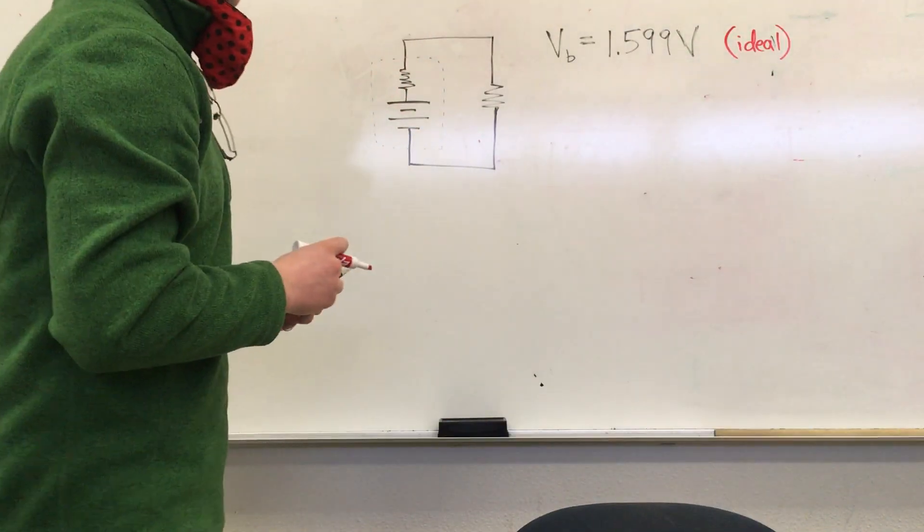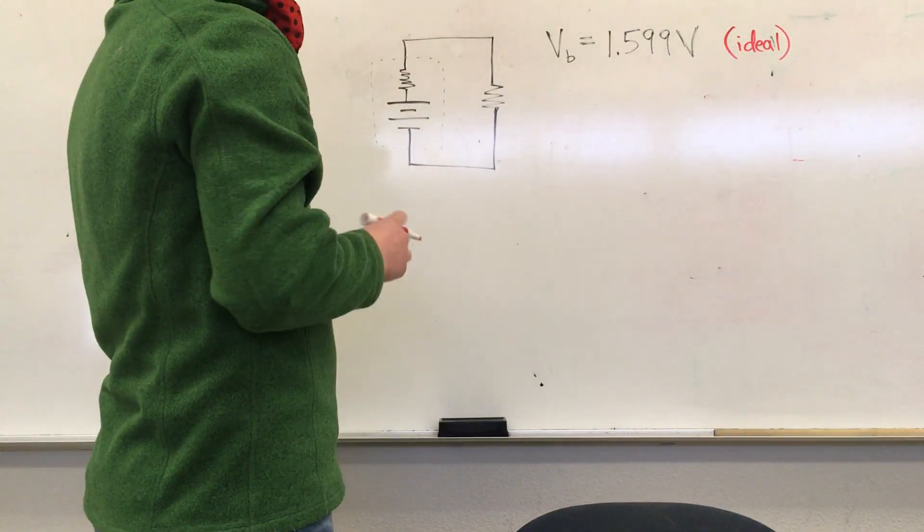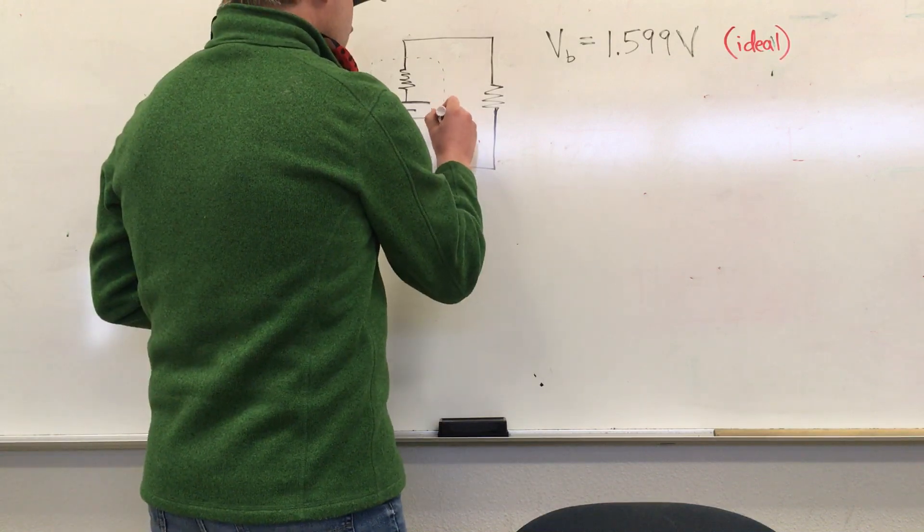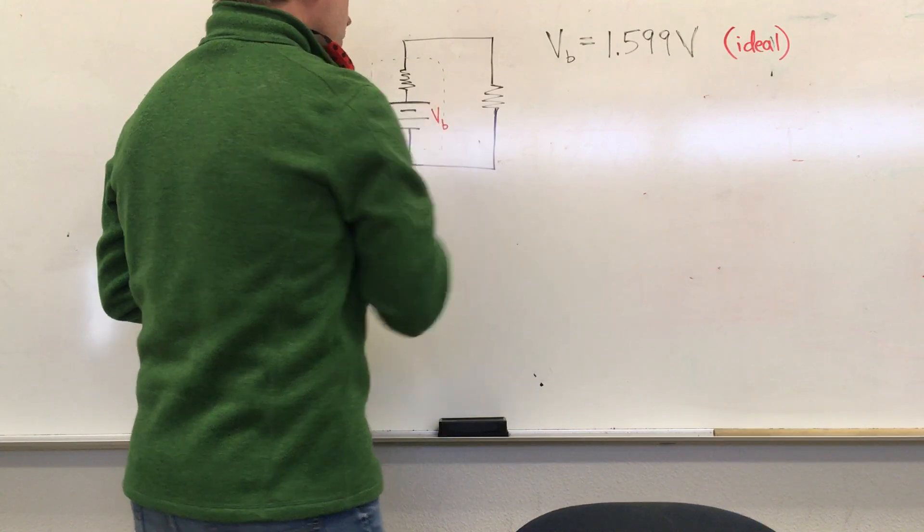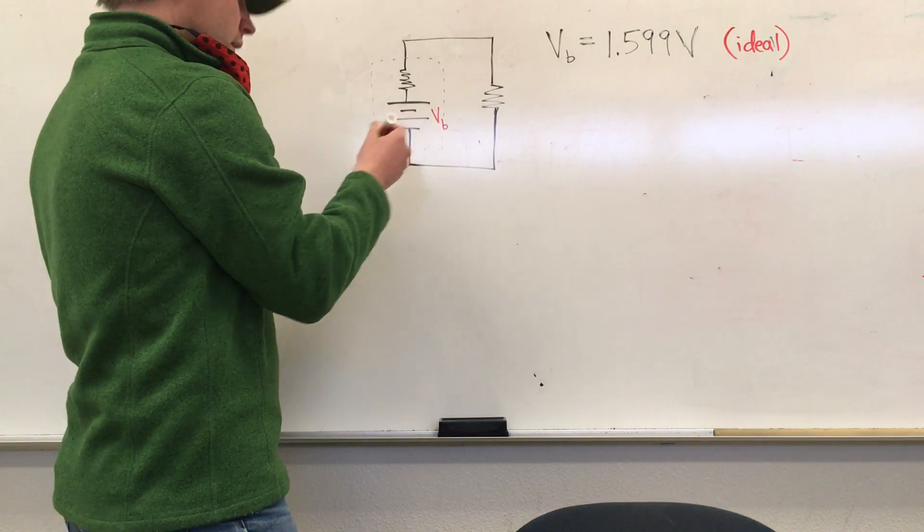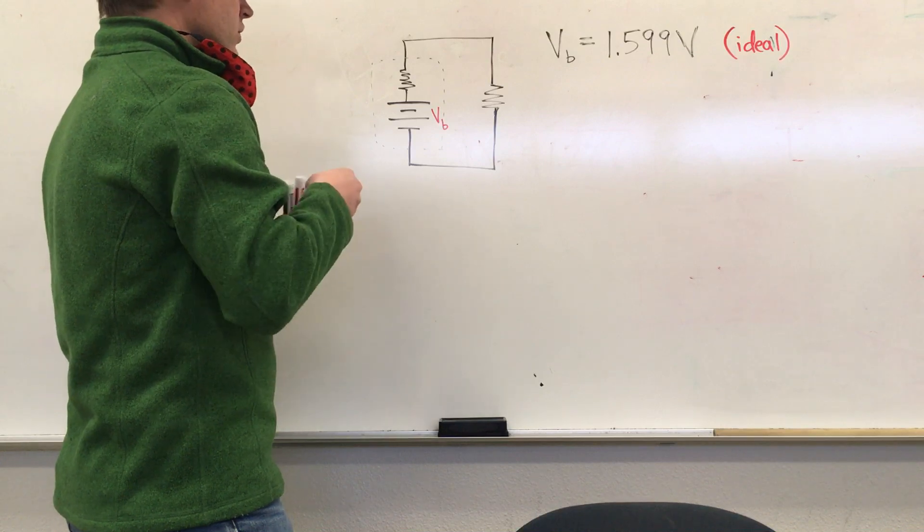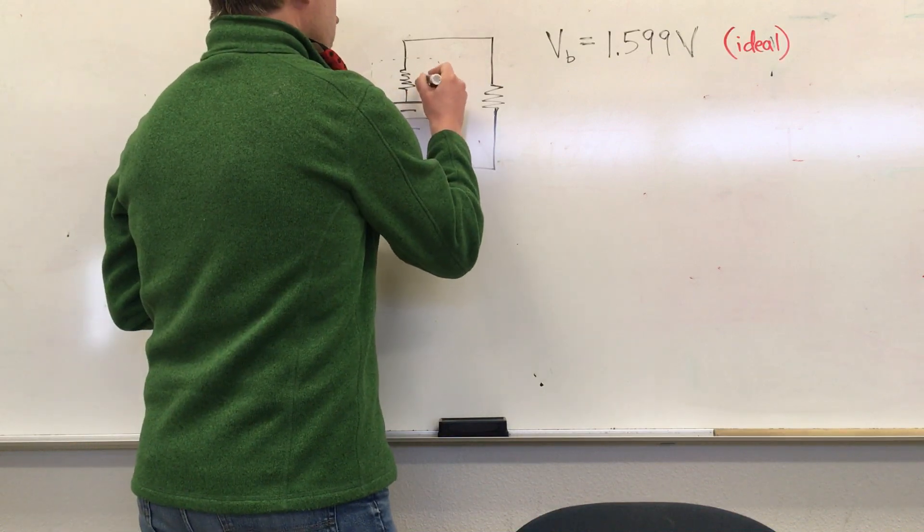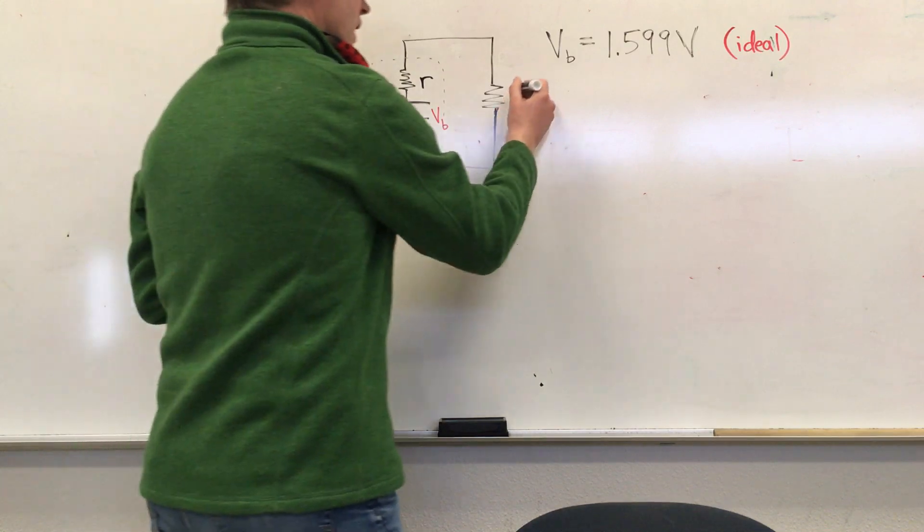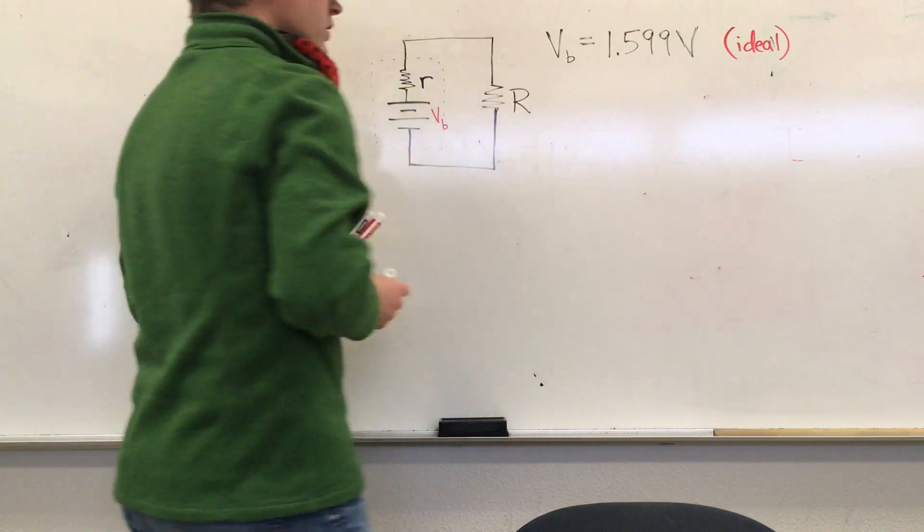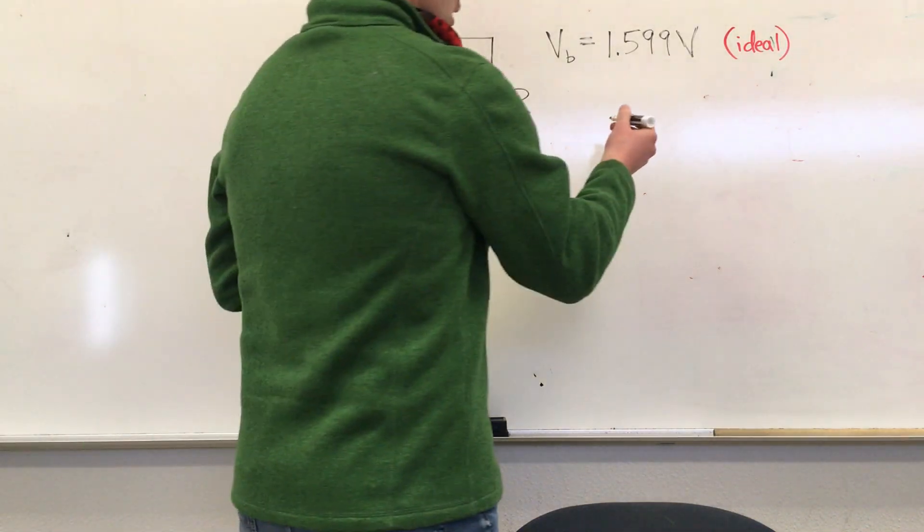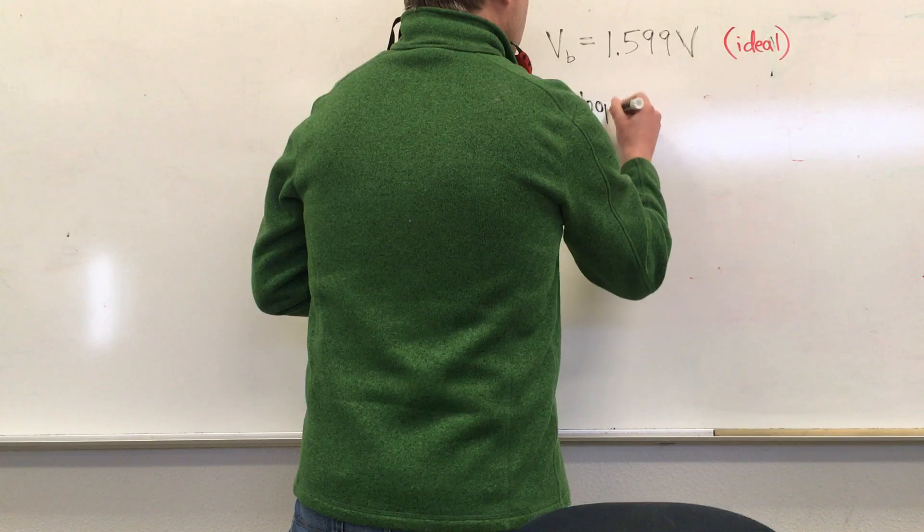Now that means that this battery specifically is supplying V sub B to the circuit, and it's going to drop in two pieces: one over the internal resistance of battery, little r, and it's going to drop over the external resistance of the circuit, which in this case is just one resistor, big R.